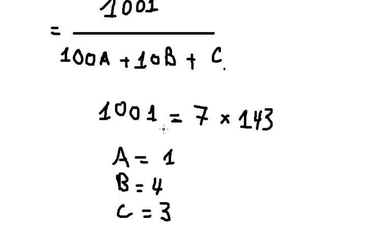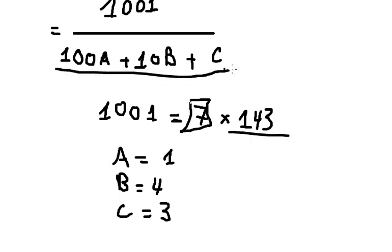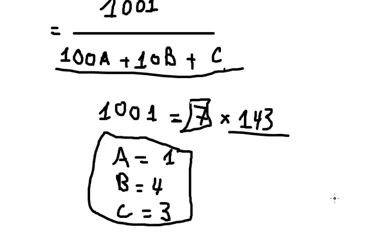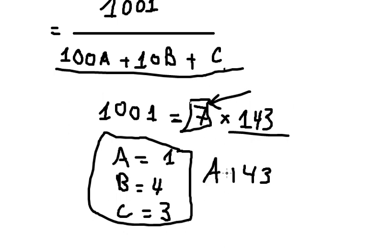We have only two factors here, and if we divide by 7 — which is the key factor — we get a three-digit number that is suitable. That's why the answer works out. The final answer is 7. Thank you for watching.